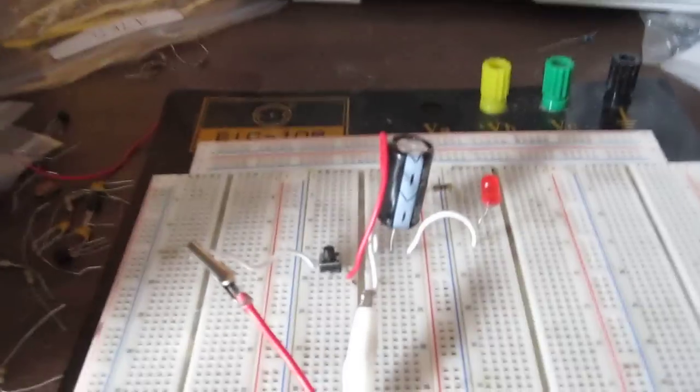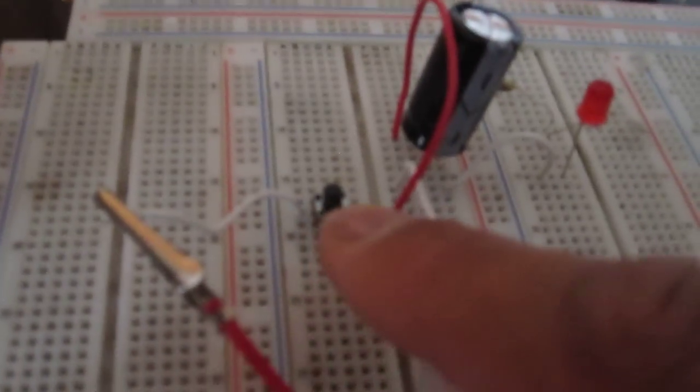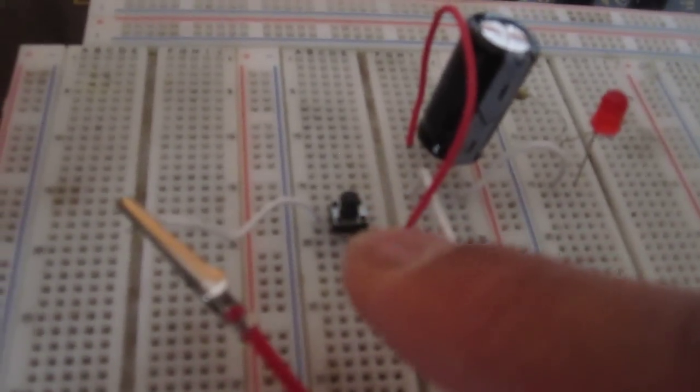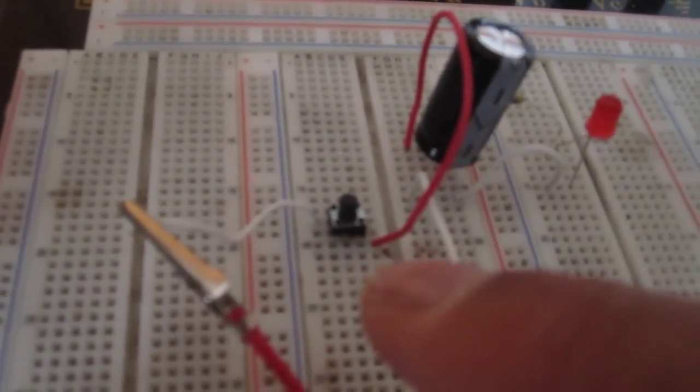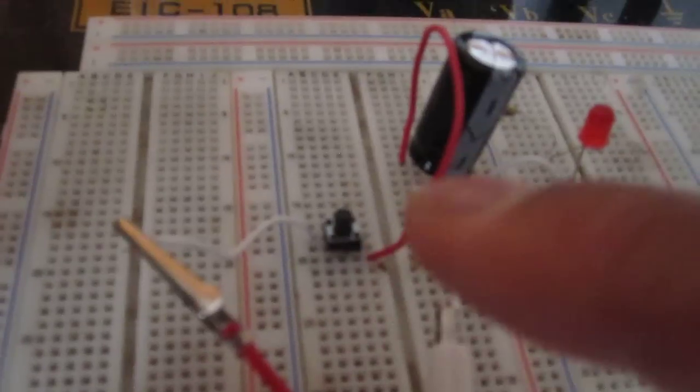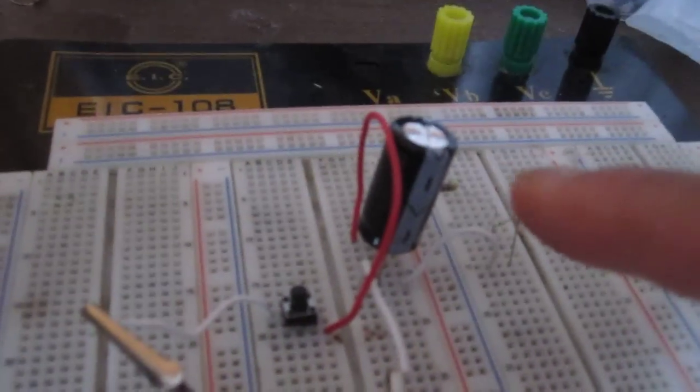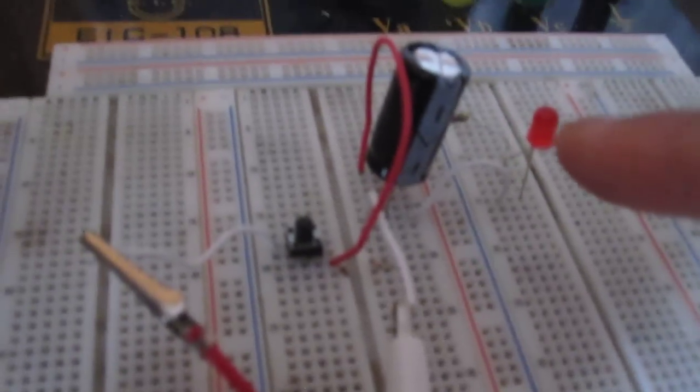In this circuit I'll just quickly go over the setup. I have a push button. This is a normally open push button, so when I press it down it's closed. Right now it's open, so no power is going to the capacitor or LED.